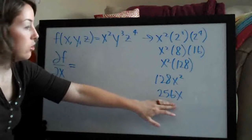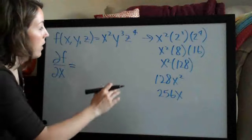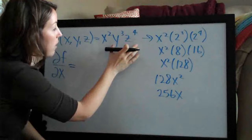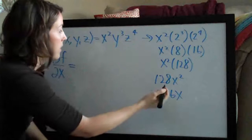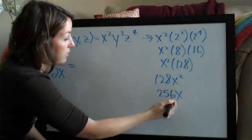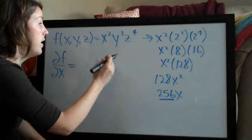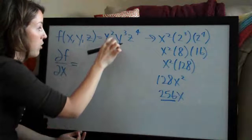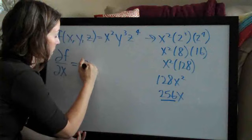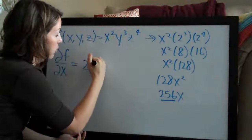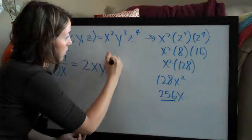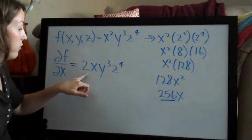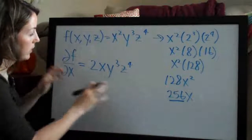What I'm hoping you can see from this is that it's exactly the same thing. We're going to hold these two things constant and they are going to be like a coefficient, and this 256 stays. So this is actually going to be — the answer — and let's go ahead and write it out: it's going to be 2x times y cubed times z to the fourth. That's going to be the answer for the partial derivative.